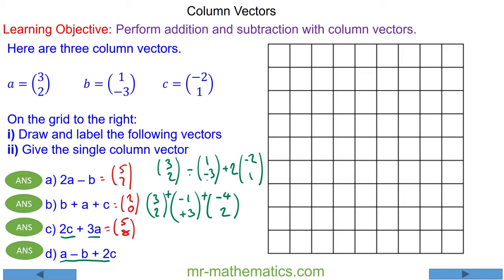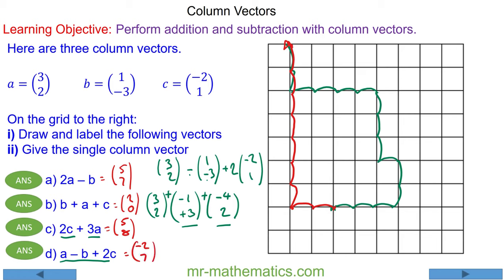And we're going to add these together. Starting here, 3 to the right and 2 up, then 1 to the left and 3 up, and then 4 to the left and 2 up. So our resultant vector is 2 to the left, which is negative 2, and 7 up. You can see this works because 3 take away 1 is 2, 2 take away 4 is minus 2, 2 add 3 is 5, and 5 add 2 is 7.